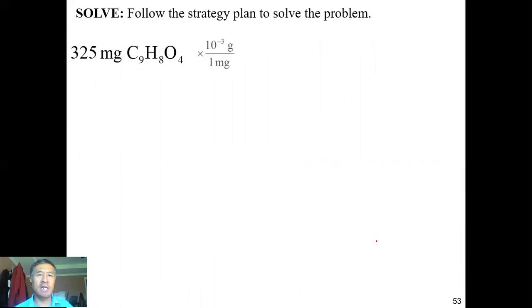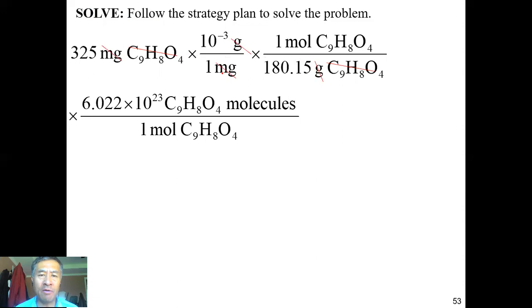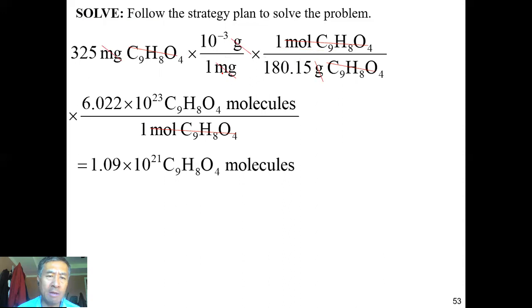Starting with 325 mg, multiply by the conversion fraction (1 g / 1000 mg) to get grams, then use the molar mass of C9H8O4 to cancel grams and get moles, then apply Avogadro's number (6.022 × 10²³ molecules/mol) to get the final answer: 1.09 × 10²³ molecules of C9H8O4.